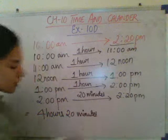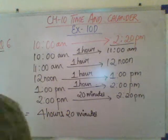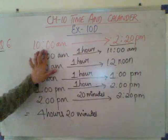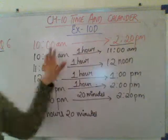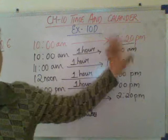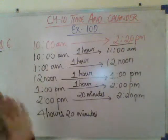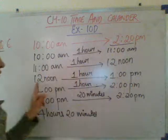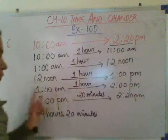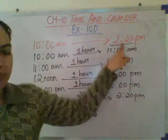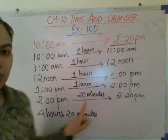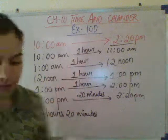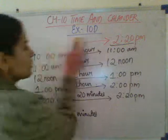Let us revise this question. A train leaves Delhi at 10 a.m. and reaches Jaipur at 2:20 p.m. From 10 to 11 is 1 hour, 11 to 12 is 1 hour, 12 to 1 is 1 hour, 1 to 2 is 1 hour, and 2 to 2:20 is 20 minutes. Total: 4 hours 20 minutes — this is the total time for the train to reach Jaipur from Delhi.